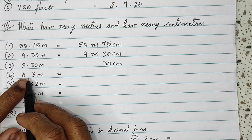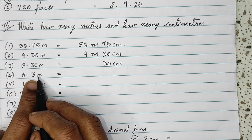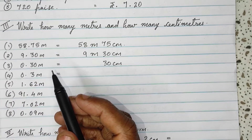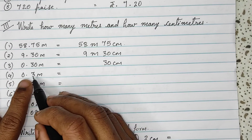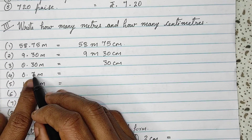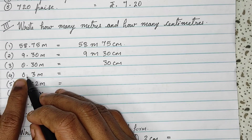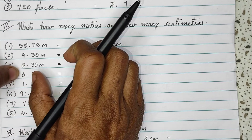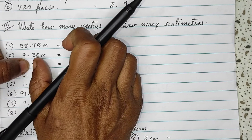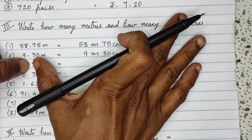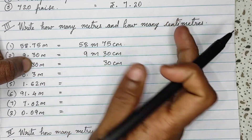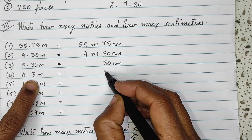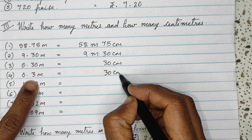Again, 0 has no value here. But here 3 meters is written. See, immediately after the point, 3 is given — not 30, just 3. And compare this with the previous where 30 was after the decimal. So, this is also the same — 30 centimeters.